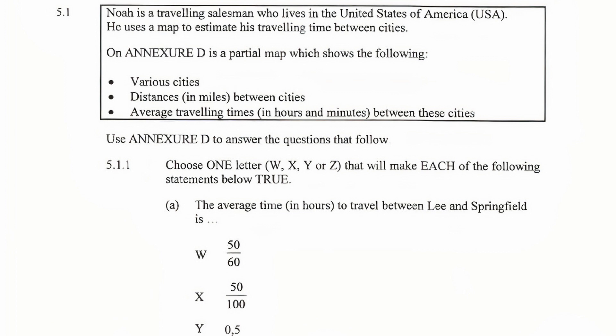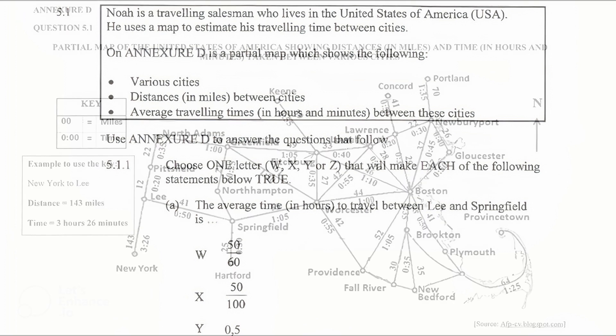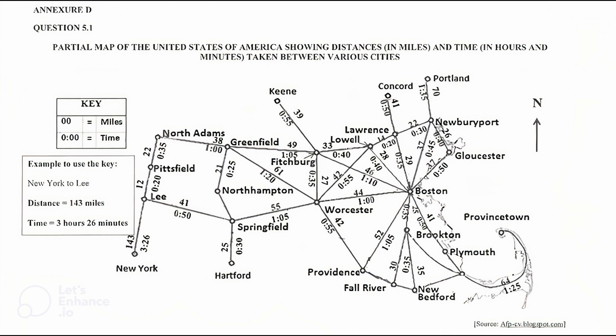In this video we'll be working through question 5 of Math Lit paper 2, November 2021. If you'd like to download a copy of this question paper, the link is in the description below. 5.1: Noah is a traveling salesperson who lives in the United States of America. He uses a map to estimate his traveling time between cities. On Annex D is a partial map which shows various cities, distances in miles between cities, and average traveling times in hours and minutes between these cities.